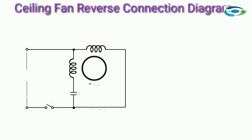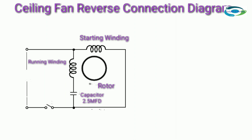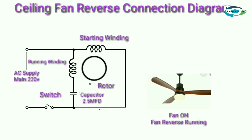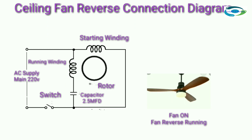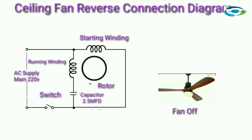Ceiling fan reverse connection diagram: starting winding, running winding, rotor, capacitor 2.5μF, switch, AC supply 220V. Fan on — fan reverse running. Fan off.